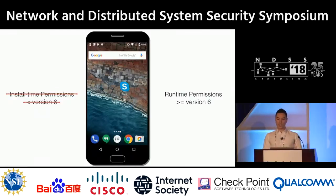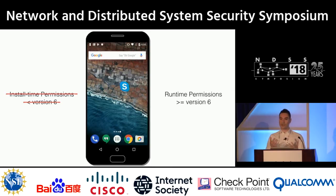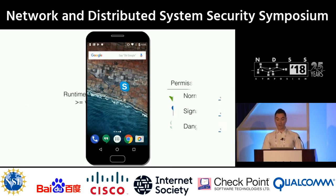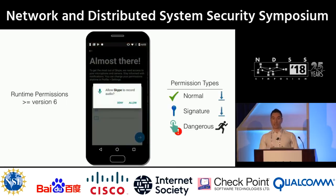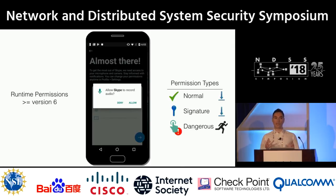On version six, Android finally switched to the runtime permission model. This was a much-anticipated change that we as a community have been advocating for for a very long time. With this change, dangerous permissions are now requested from the user when the application actually wants to utilize them, providing some context to the user to make the right decision.